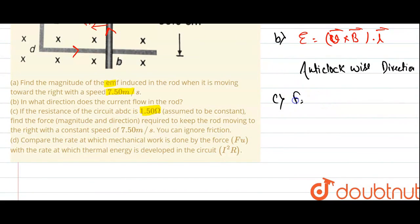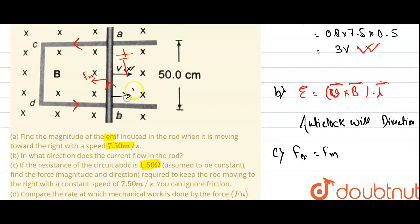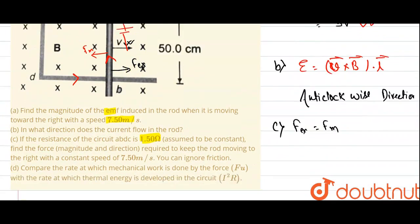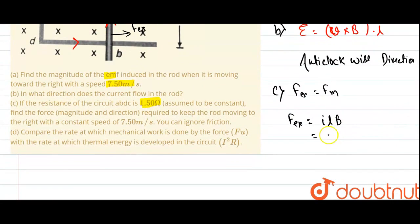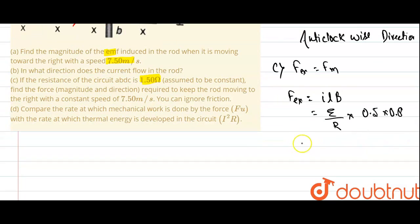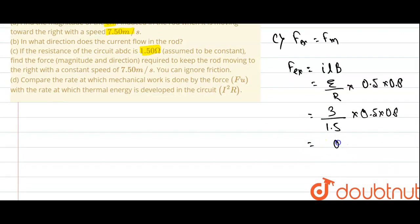The external force equals the magnetic force, so the rod will move with constant velocity V. External force equals I·L·B, where I = E/R. With E = 3, R = 1.5, L = 0.5, and B = 0.8, the value of the external force works out to be 0.8 Newton. This is the answer for part C.